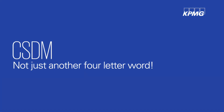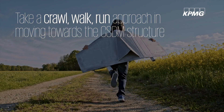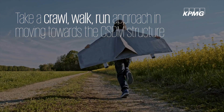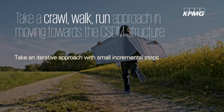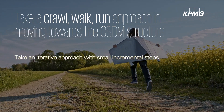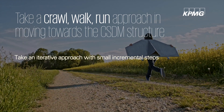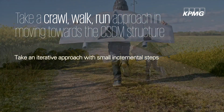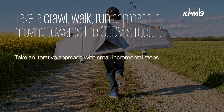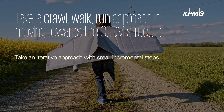Earlier we mentioned a crawl-walk-run approach as a way of incrementally moving into the CSDM structure. When it comes to this approach, I think there are two main things to focus on — the first is at the crawl level. If you're not really aligned to the CSDM or just starting your CMDB journey, focus on the business application and application services. A very simple and effective crawl approach is to not try to identify every single service and instance.